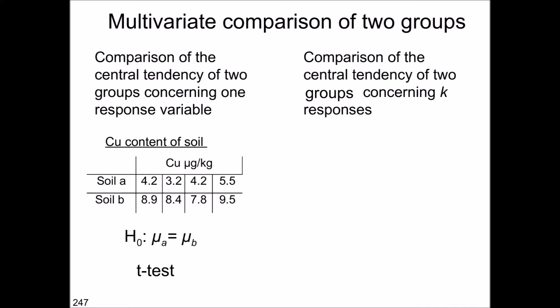Multivariate comparison of two groups. To understand what we are doing, we return to the univariate case and the comparison of the central tendency of two groups. Here is an example where you have measured the copper content in two soils a couple of times, and the question is whether the copper content in the soils is significantly different. The null hypothesis is that mu of soil A is the same as the mu of soil B. This is one of the examples where you use the t-test, which we have already discussed in the univariate part of the course.